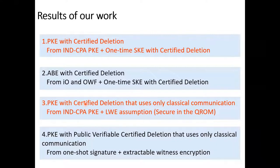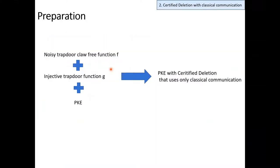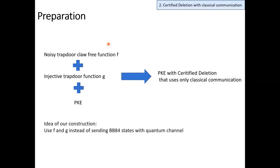In the certified deletion explained so far, the sender needs quantum operations. In this work, we have improved this disadvantage and constructed certified deletion that uses only classical communication. In this work, we have used noisy trapdoor claw-free functions F, injective trapdoor functions G, and public key encryption to construct a protocol. These functions are constructed from the LWE assumption and have some cryptographic properties. Using these properties, a classical sender can generate a quantum state in a receiver's register. I explain how to use noisy trapdoor claw-free functions F to generate a quantum state.